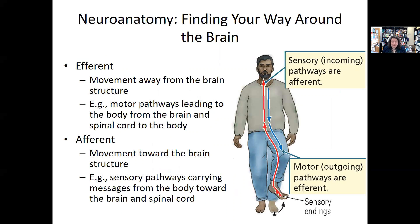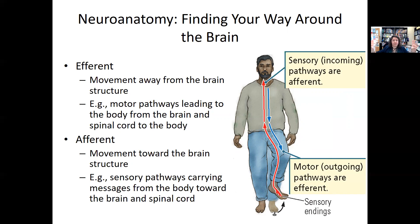The last anatomical terms you need to know are efferent and afferent. Efferent is moving away from the brain — motor messages, for example, move in that direction. Afferent is movement towards the brain — sensory pathways carry information from our outer neurons back up to the brain.